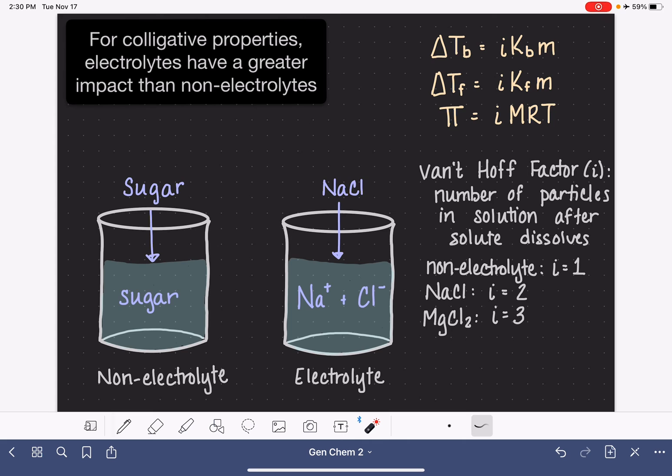If we have a non-electrolyte, the value of i is just simply going to be one and mathematically it doesn't matter. It doesn't have any effect on the overall outcome of the boiling point, the freezing point, or the osmotic pressure.